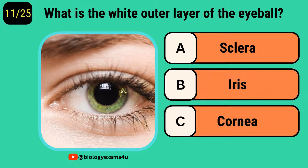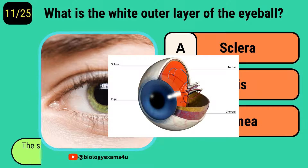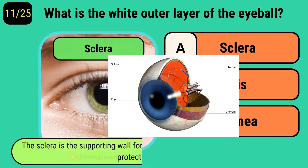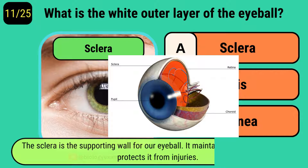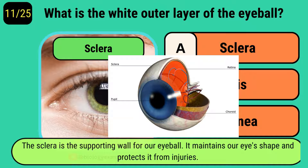What is the white outer layer of the eyeball? It is called the sclera. The sclera is a supporting wall of our eyeball. It maintains eye shape and also protects it from injuries.